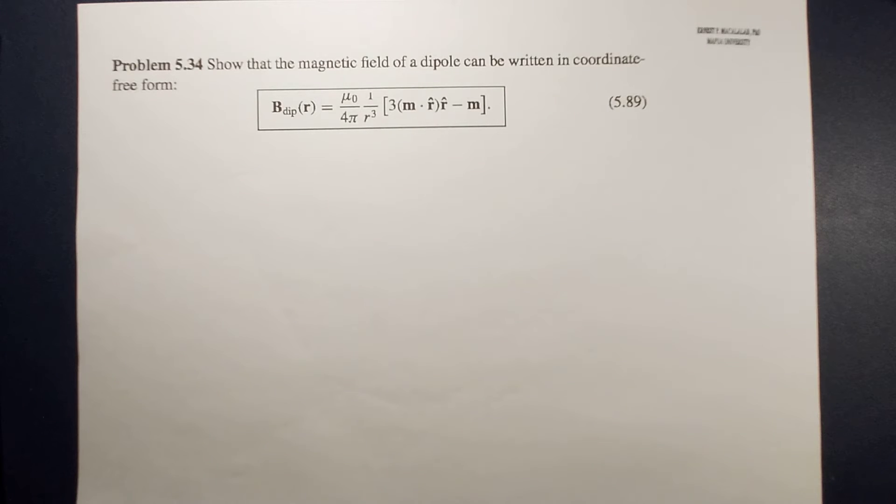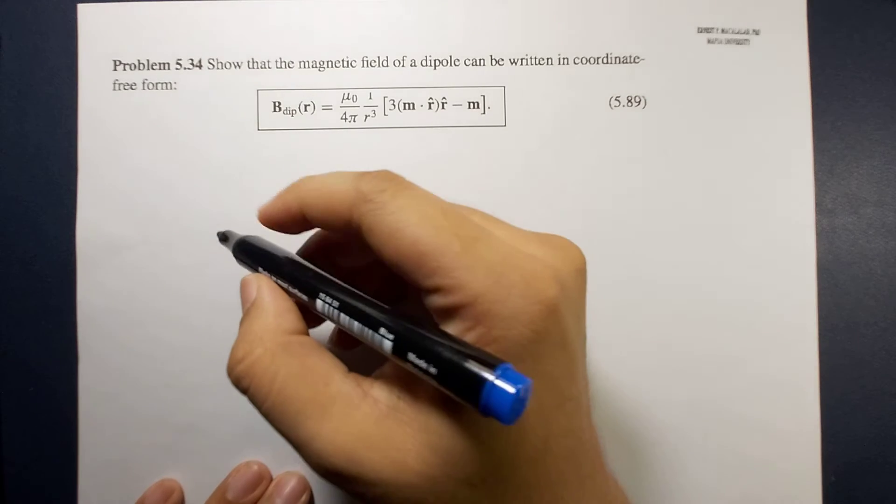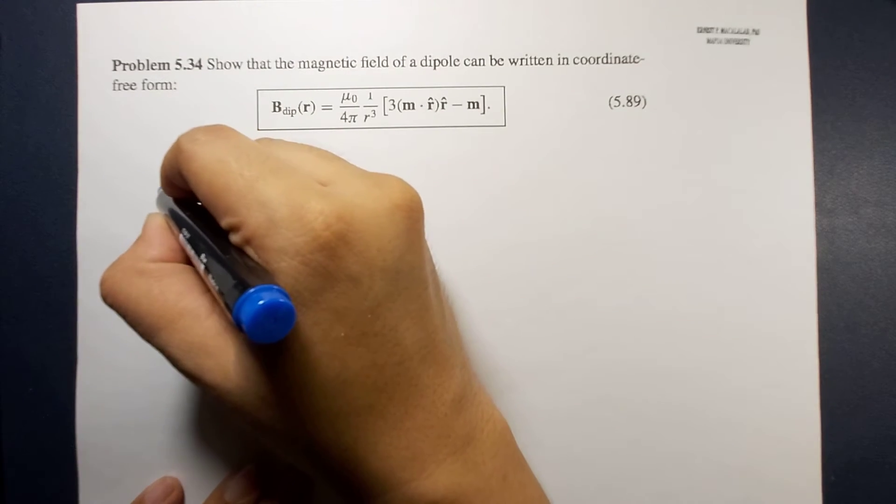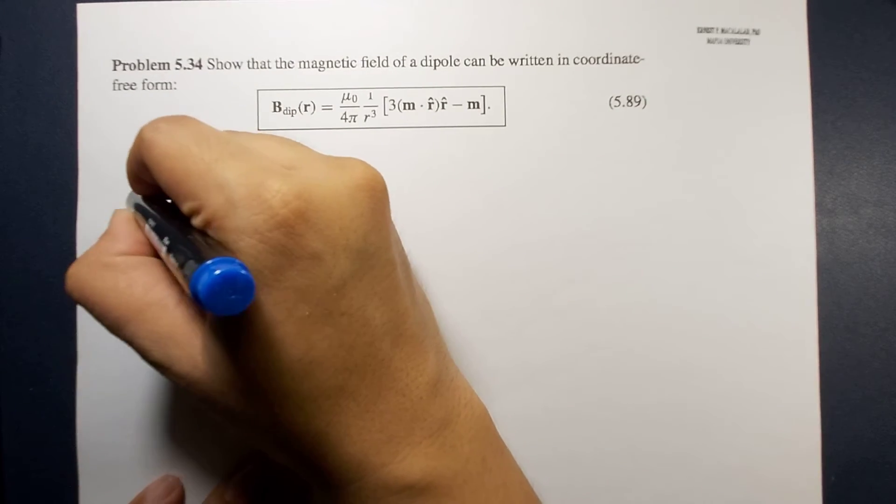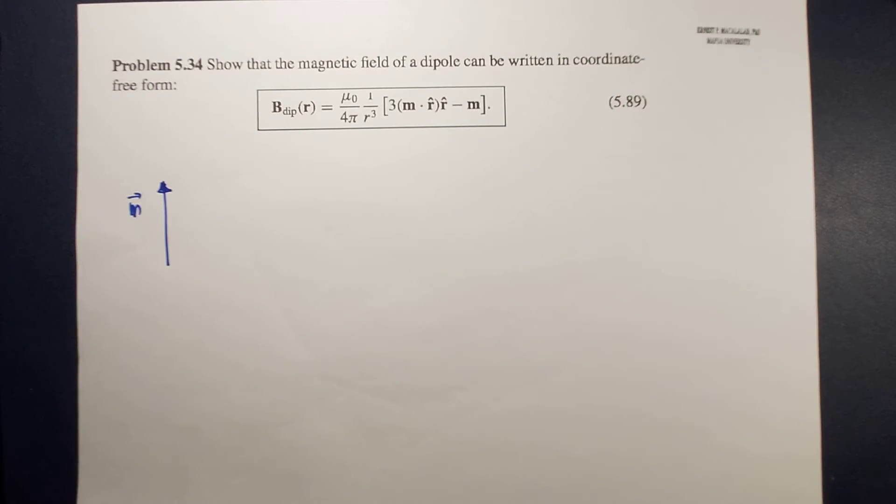So as shown in the book in figure 5.54, here we define or we set that the magnetic dipole moment is along the z-axis.